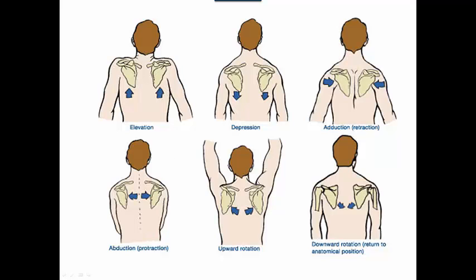Then we have upward and downward rotation of the scapula. Upward rotation allows us to have almost 180 degrees of range of motion for our glenohumeral joint. You need a point of reference when talking about upward and downward rotation. I use the glenoid fossa — when it starts to point up, that's upward rotation; when it's pointing down, that is downward rotation.